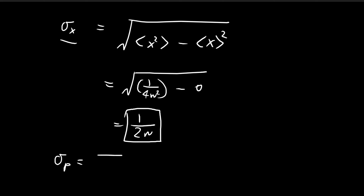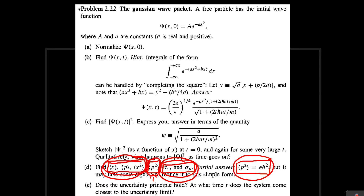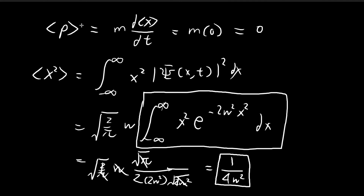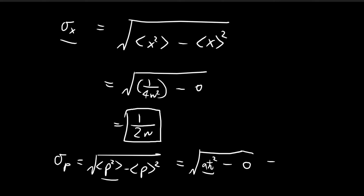We do something similar for the standard deviation of momentum, applying the same variance formula. We haven't derived the expected value of p squared ourselves, but since it's given, we substitute it directly. We also found that the expected value of p is zero, so substituting zero gives us the square root of a times h-bar squared, which equals h-bar times the square root of a. This is the standard deviation of momentum.